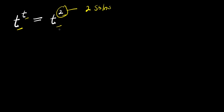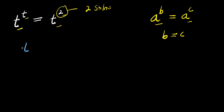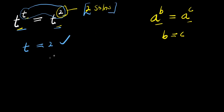Now, what a lot of people might do would be to consider this identity: if you have a to the power of b and this equals a to the power of c, now that the bases are the same, you compare the exponents, meaning b equals c. A lot of people will say that t equals 2 by simply comparing the exponents because the bases are the same. This is obviously correct, but this is just one of the solutions. We need two solutions, and in this video I'm going to show you the step-by-step process of getting both.